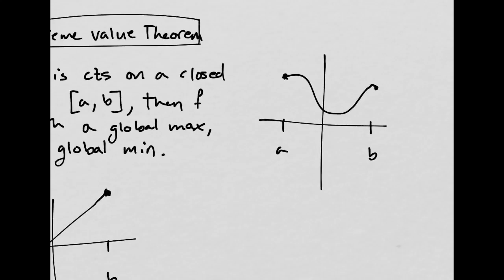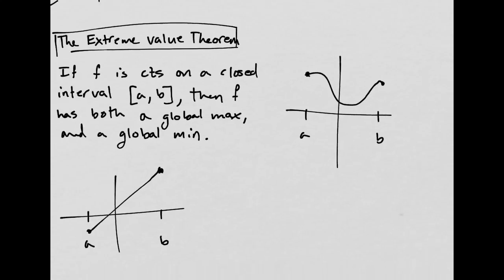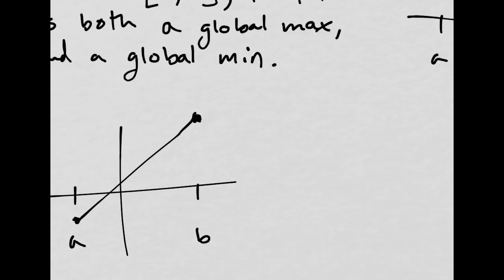Looks like the global maximum may be up there, but there's definitely something. I definitely can find one just because it's on a closed interval and it's continuous. If it wasn't continuous,